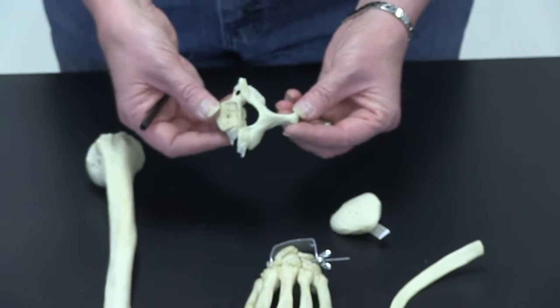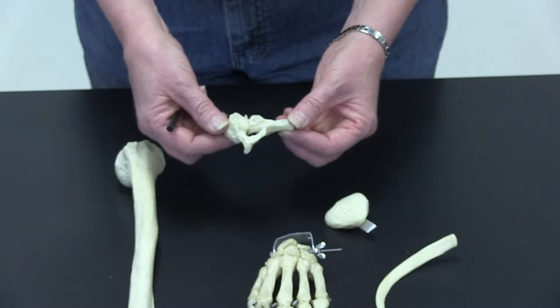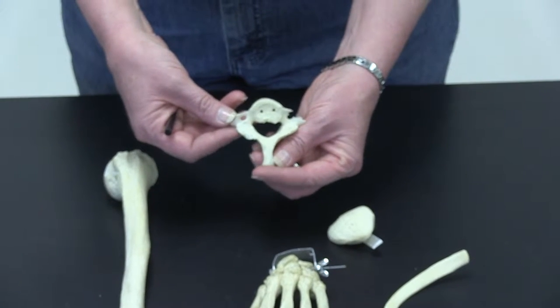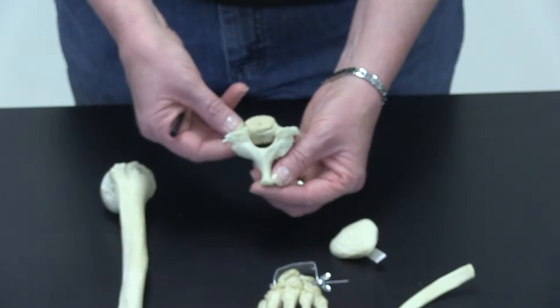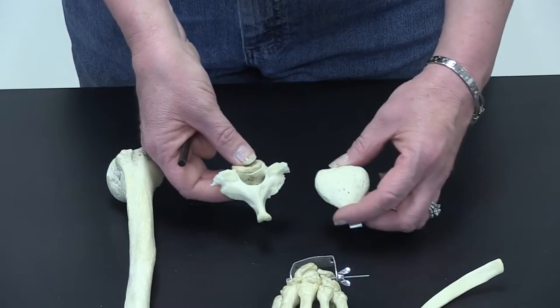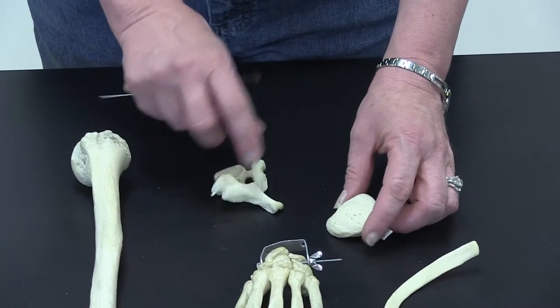We also have several bones in the body that are just simply irregular shaped. So you can tell by this vertebra that it is definitely in a regular shape. It's certainly not a long bone, and it's not a round bone. So we would call this shape irregular.